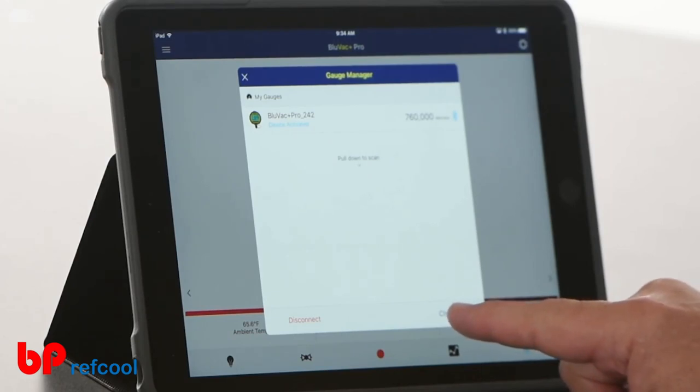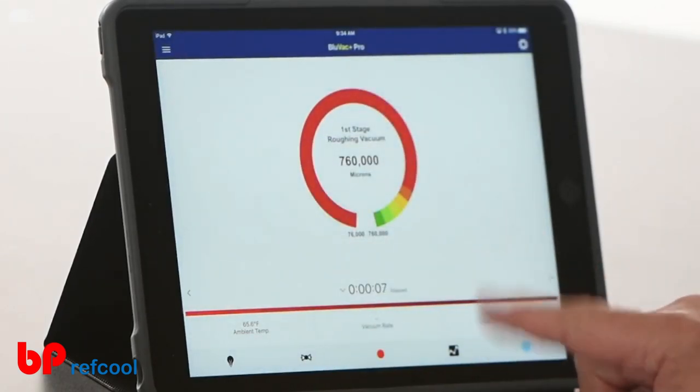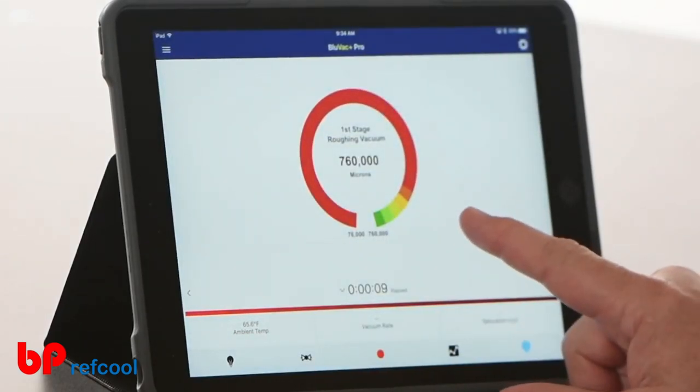I can go ahead and hit close. You can see it's displaying right now what we see on the gauge. The gauge is showing high pressure, but high pressure is 760,000 microns.